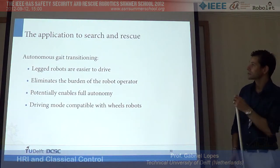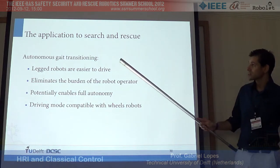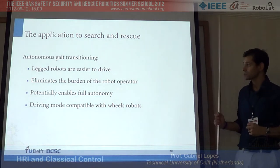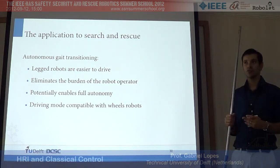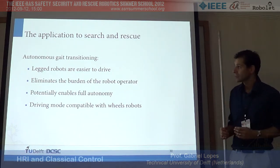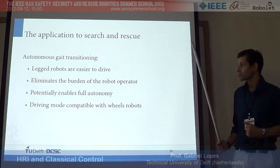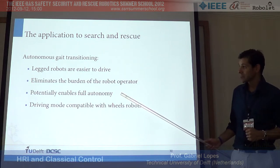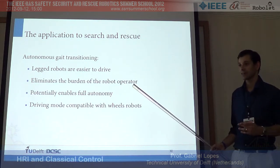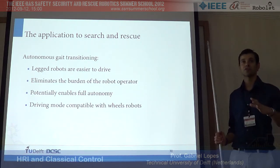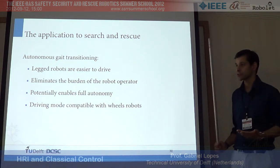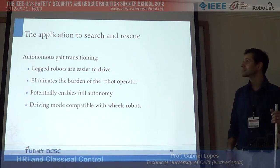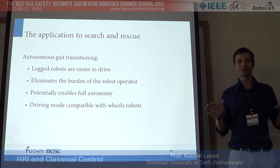Application to search and rescue: you have autonomous gait transitioning, which allows legged robots to be easier to drive. It doesn't matter that you have legs anymore — it eliminates the burden on the robot operator to pick gaits. It potentially enables full autonomy: if you design an autonomous controller for a wheeled robot, just use it here and it should be fine. The driving is compatible with wheeled robots.